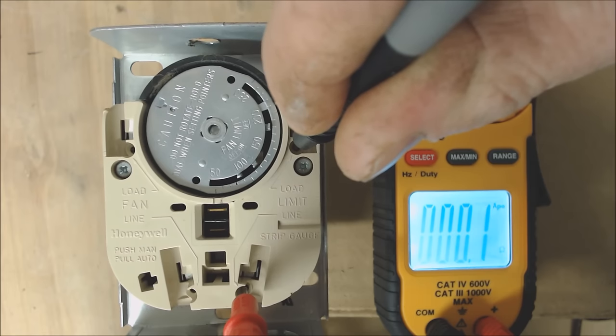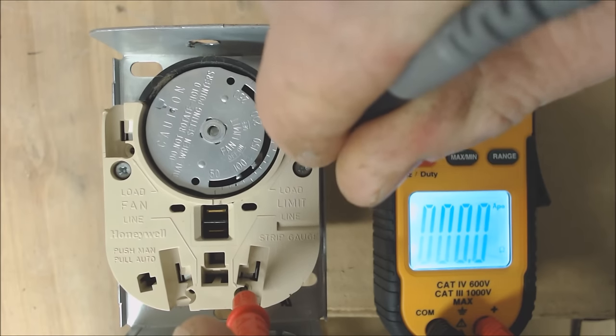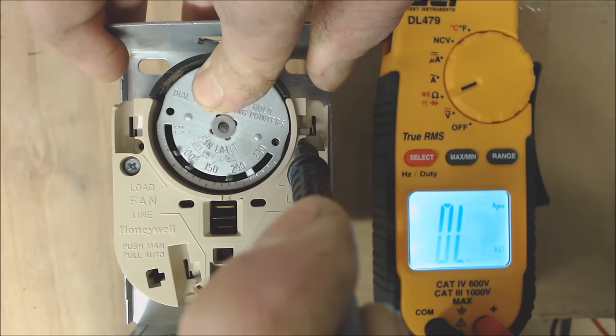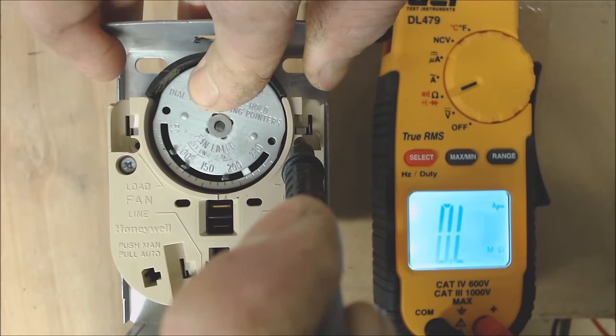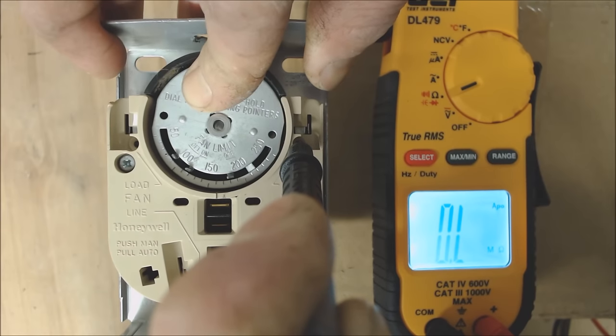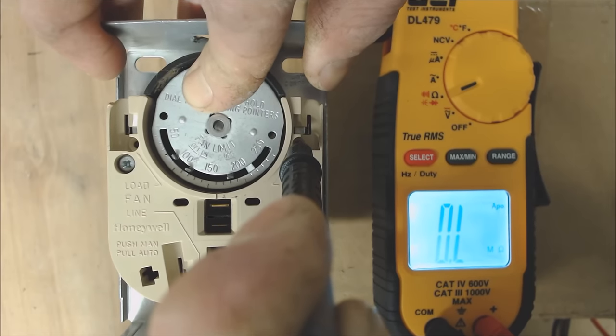we should have 0.0 ohms of resistance. If this dial was to turn all the way until it hit the limit, now you see that the wire connection inside is disconnected. So you have an OL, meaning over limit.